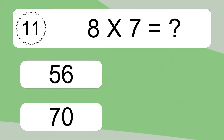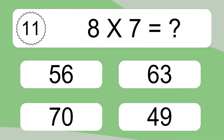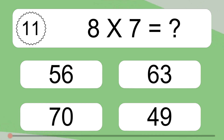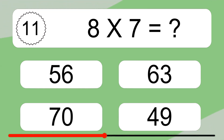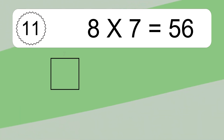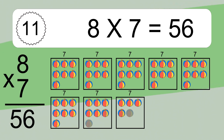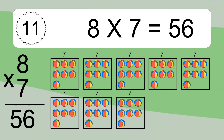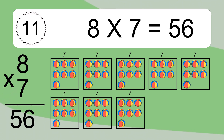8 times 7 equals what? We have 8 boxes, and each box has 7 colorful balls inside. If you count all the balls in all the boxes together, you will have 8 times 7 balls. This equals 56 balls.